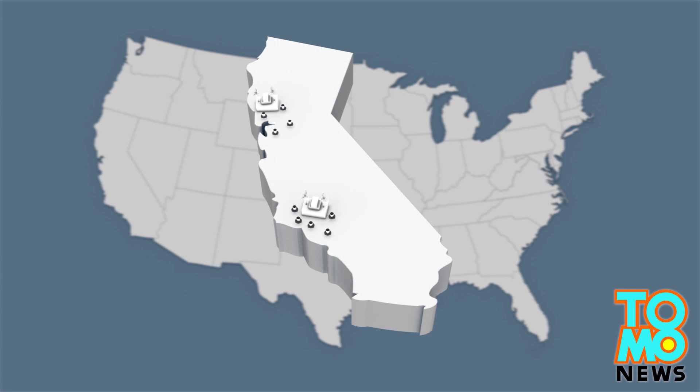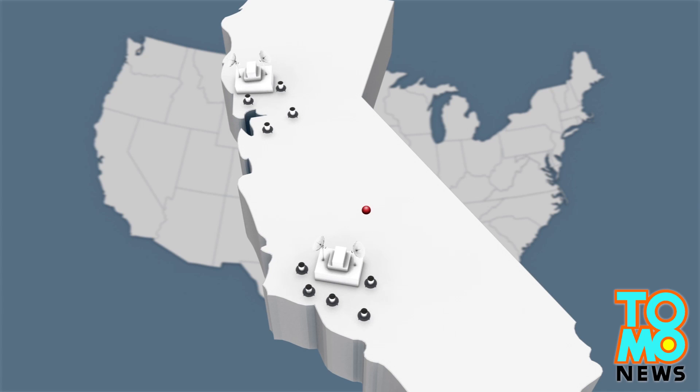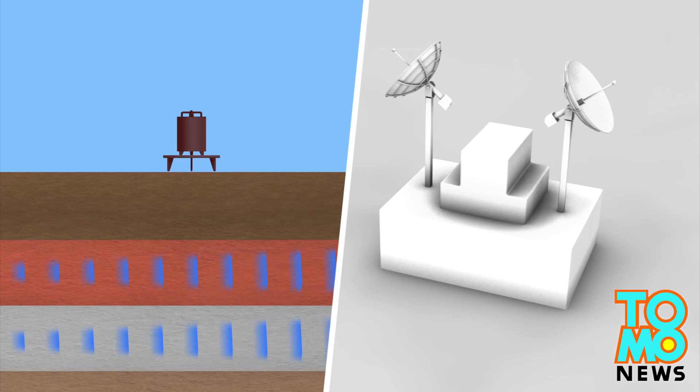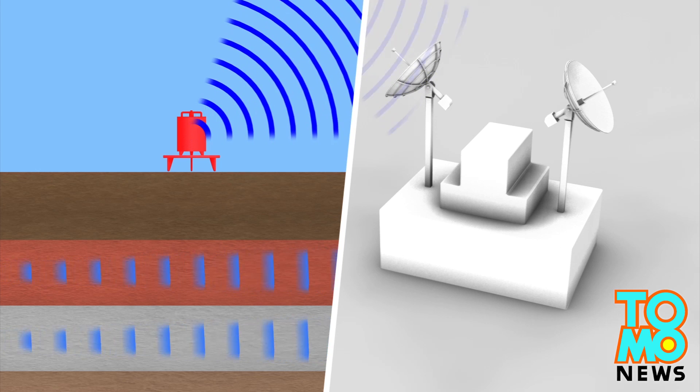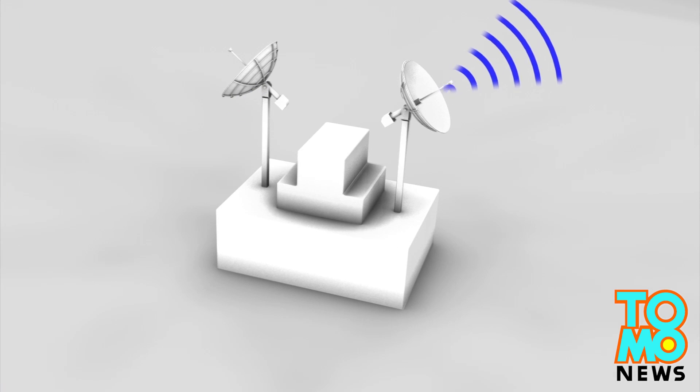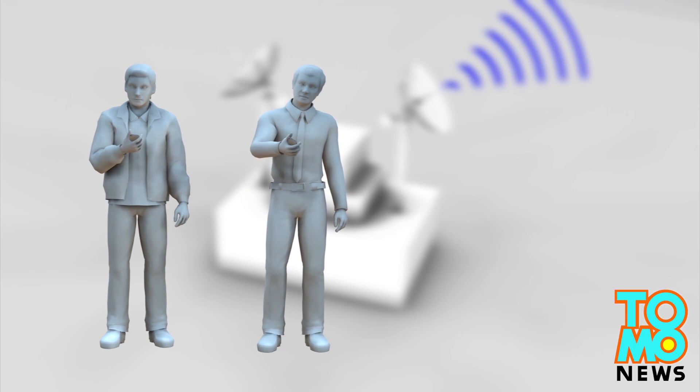A quake detection system prototype is being tested in the Los Angeles and Bay areas. Seismometers detect the P-waves, then send readings to warning centers, which currently deliver alerts to about 75 people, including researchers and emergency management personnel.